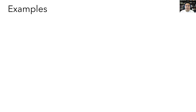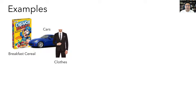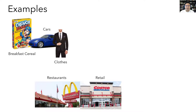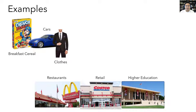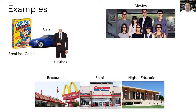Let's think of some examples for monopolistic competition. How about manufactured products like breakfast cereal, cars, or even clothing? These are all products that have a lot of different suppliers, but each product is also somewhat different. Or how about service sector industries like restaurants, retail stores, or even higher education? Again, these are all industries that have many suppliers, but they're each offering something a bit different.